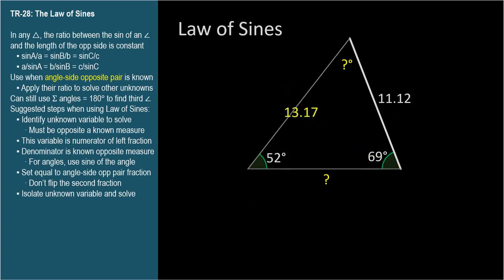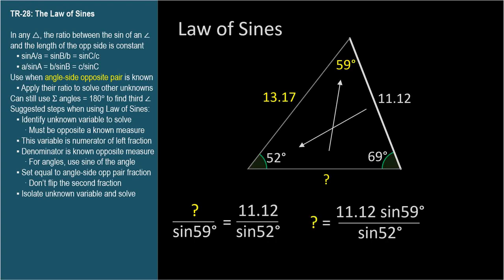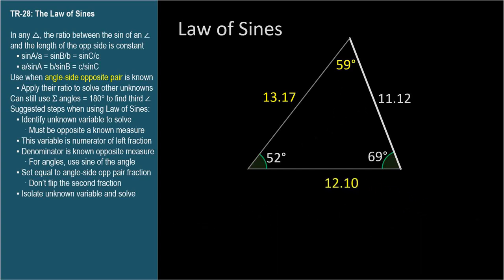We're still missing two measures, but we know two angles, the two at the bottom, so we can determine the third because the sum is 180 degrees, so the top angle is 59 degrees. Now we use the law of sines again, starting with the unknown side. Denominator is the opposite measure, set equal to the given angle-side opposite pair. Solve for the unknown. 12.10. Congratulations, you just solved an AAS triangle.